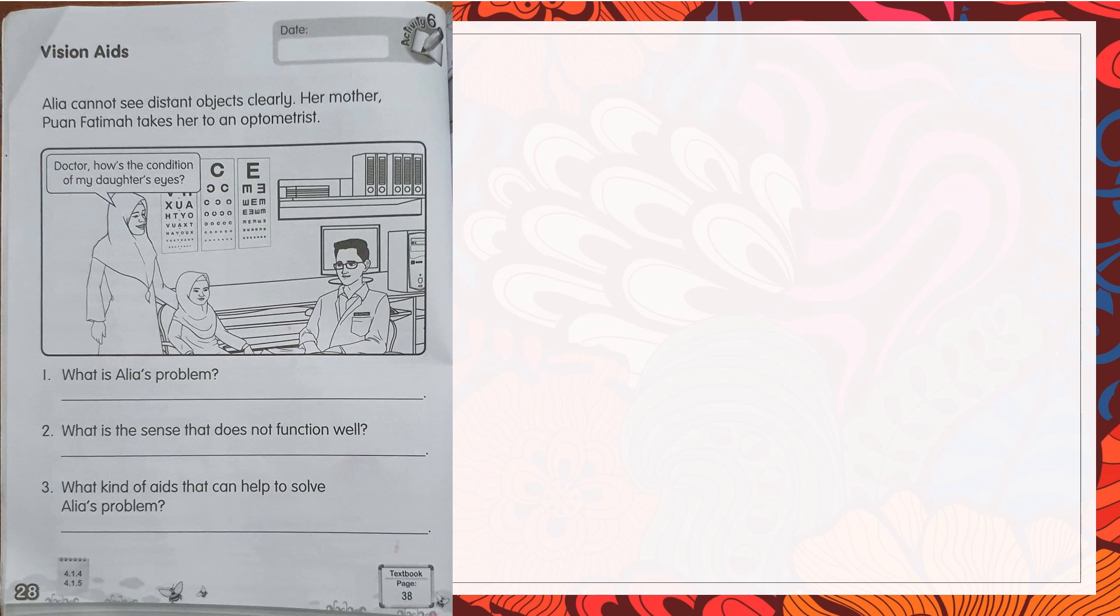Now, we go through the second exercise in the activity book, page 28. Vision aids. Alia cannot see distant objects clearly. Her mother, Puan Fatima, takes her to an optometrist. Alia tidak dapat melihat objek jauh dengan jelas. Ibunya membawa Alia berjumpa dengan doktor mata. Doktor, how's the condition of my daughter's eyes? Doktor, bagaimana keadaan mata anak saya? Okay, sekarang kita pergi ke soalan yang pertama.